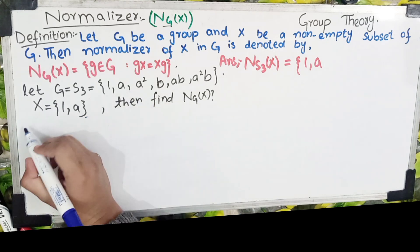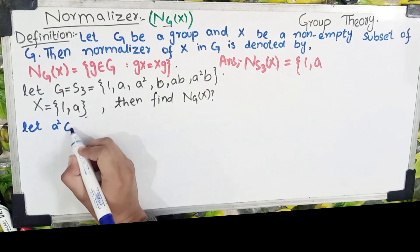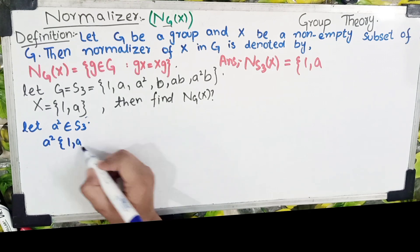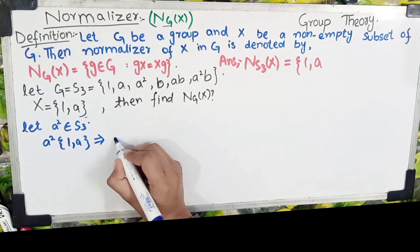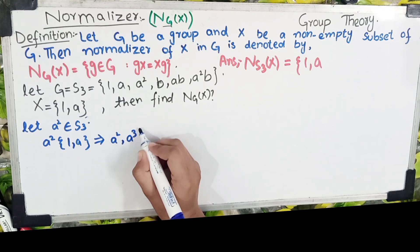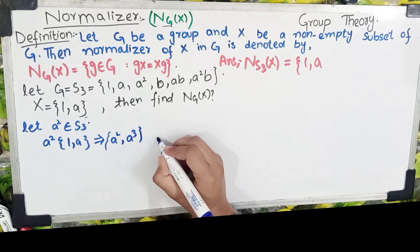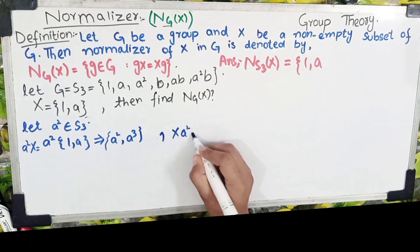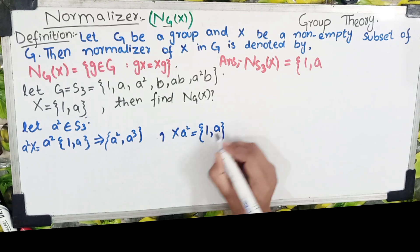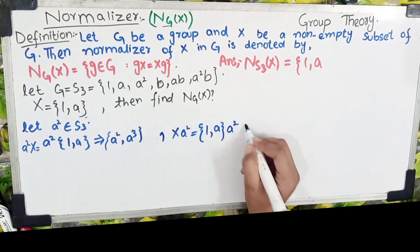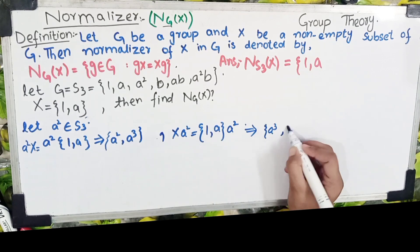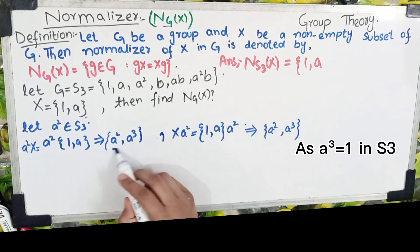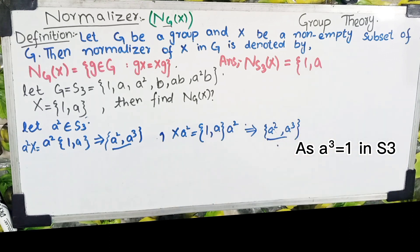اب تیسرا element: let a² ∈ S3۔ a²·{1, a} = {a², a³} = {a², 1}۔ اور {1, a}·a² = {a², a³} = {a², 1}۔ یہ دونوں answer same ہیں، تو a²·X = X·a²۔ a² بھی normalizer کی set میں آ جائے گا۔